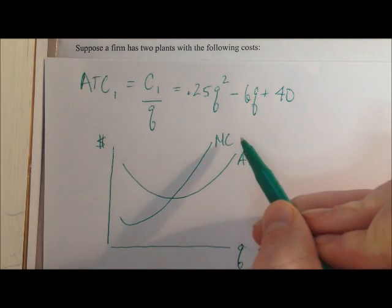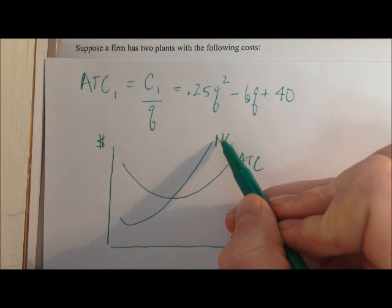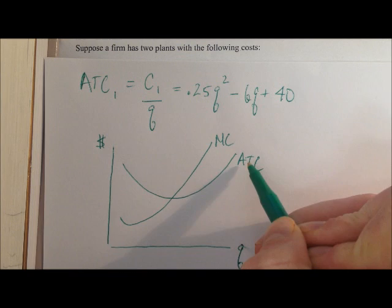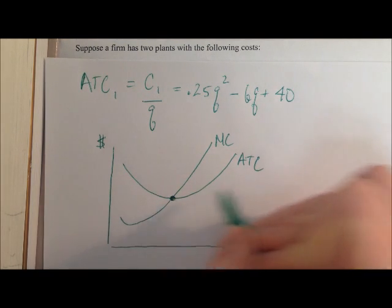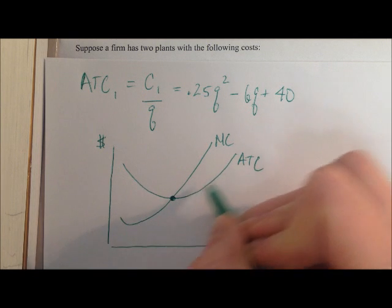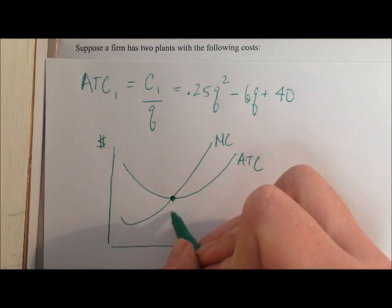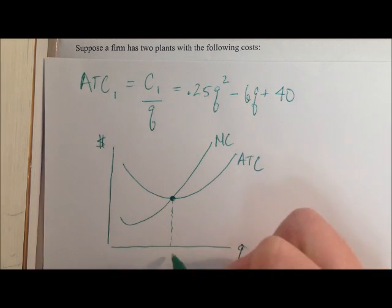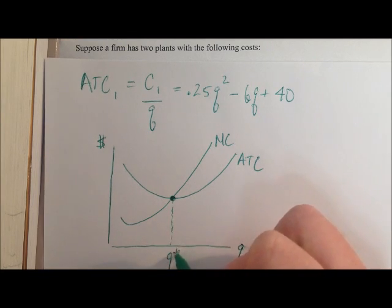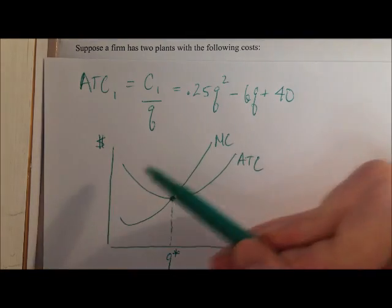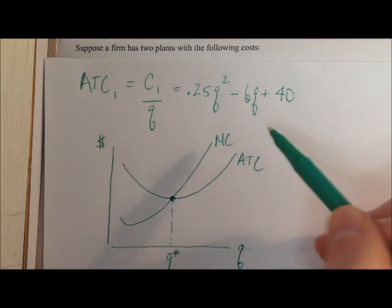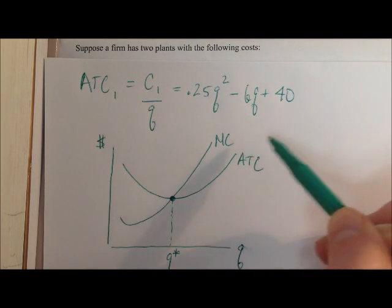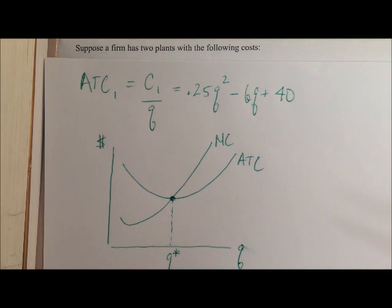And then our marginal cost curve is going to look like this. And it's always going to be the case that marginal costs intersect average total costs right here at the minimum of average total costs. And this is the point that we're trying to find in this problem. We want this Q right here. And this graph is our key to how we're going to find that.